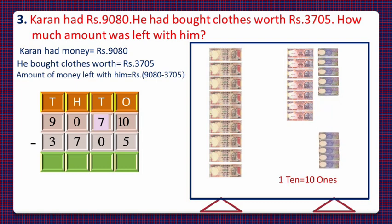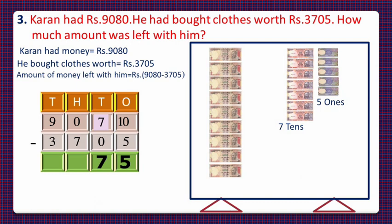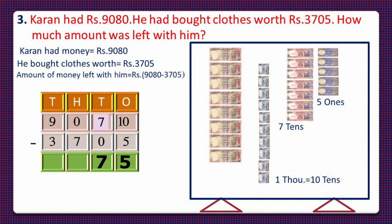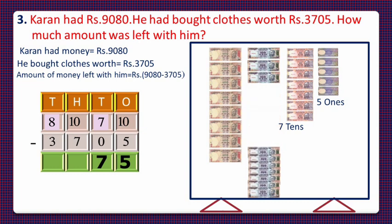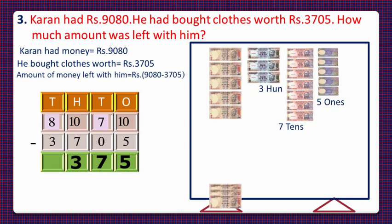He will give away 5 rupees and is left with 5 rupees — write 5 in the ones column. He had 7 ten-rupee notes, that is 7 tens — write 7 in the tens column. He had to give 700 rupees but had no 100-rupee note, so he converts a 1000-rupee note into 10 hundred-rupee notes. Now 10 hundreds are there and thousands reduce from 9 to 8. He gives away 700 and is left with 300. From 8000 he gives away 3000 and is left with 5000.